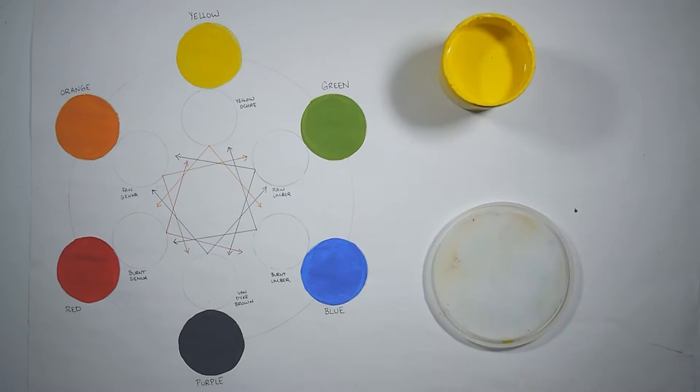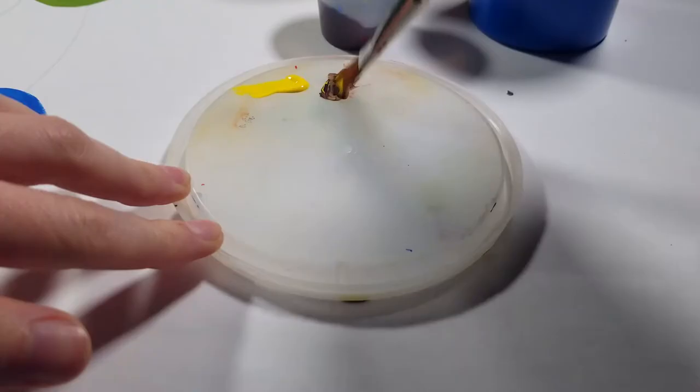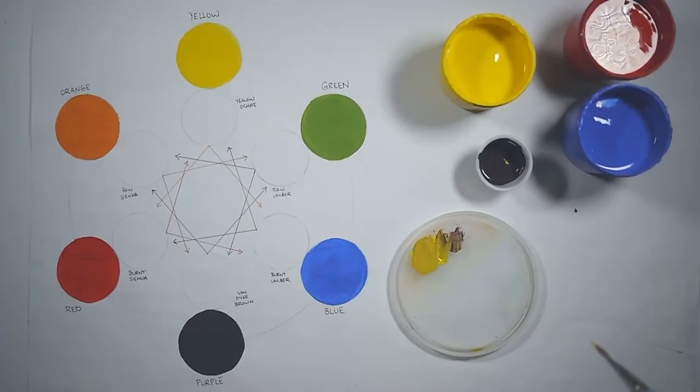If I start with yellow as my base and just add in purple to try to make yellow ochre, the color comes out far too green, which is really apparent when I put the actual yellow ochre paint next to it.